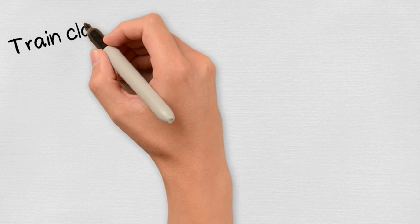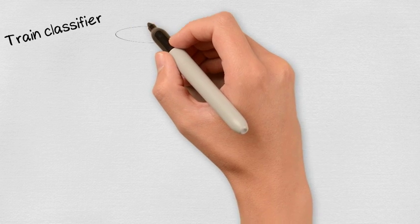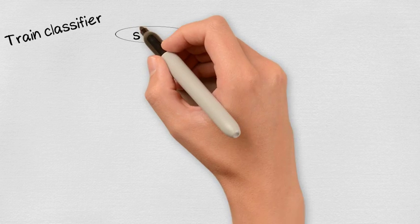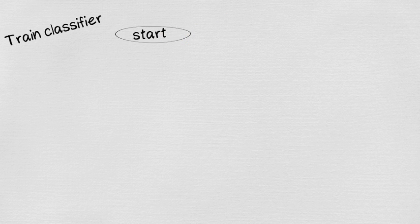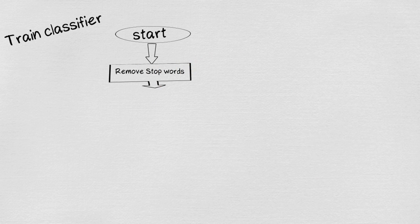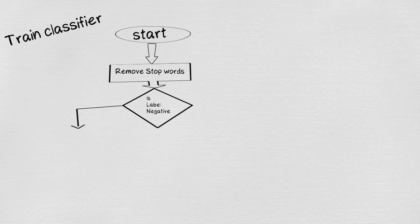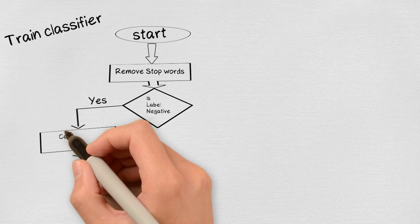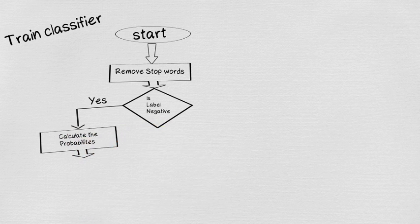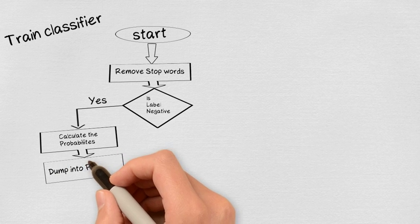Now let us see each of them in detail. In the train classifier, stop words is the list of neutral words like nouns, articles, prepositions, etc. We remove these stop words and for the remaining words, based on the label, we divide reviews into positive and negative and calculate the probabilities of each word and dump into pickle file.